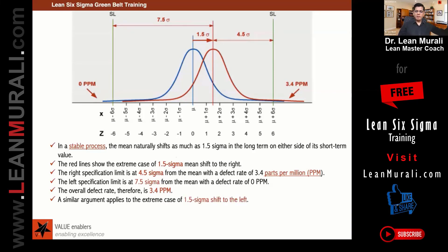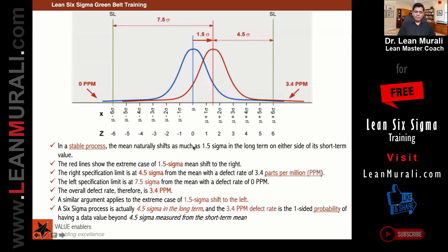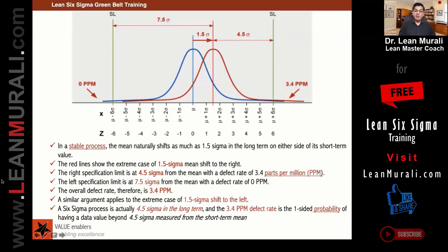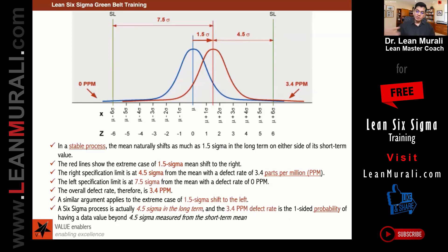So the overall defect rate will be 3.4, and the same argument applies if it shifts to the left. A six sigma process — and this is something most of us don't see in the books — is actually 4.5 sigma in the long term. For six sigma experts: six sigma process is actually 4.5 sigma in the long term, and 3.4 PPM defect rate is the one-sided probability of having data beyond 4.5 sigma measured in the short term.